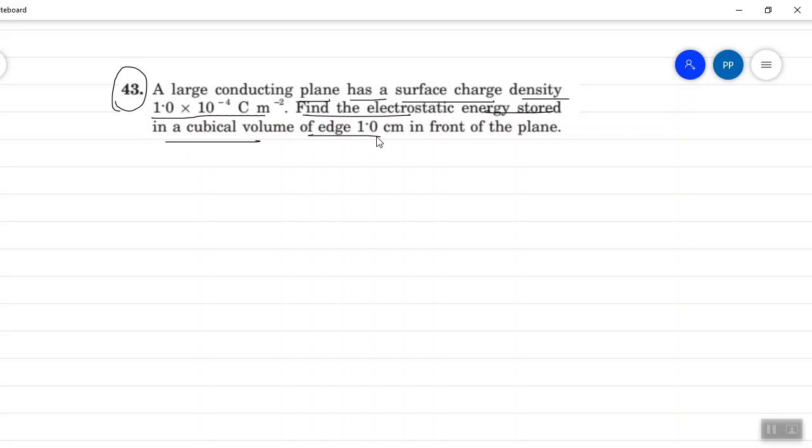So guys, we will discuss the question. This is a conducting plane with surface charge density sigma, which is 1 into 10 to the power minus 4.